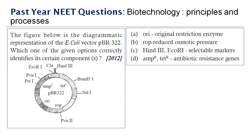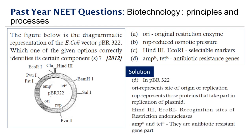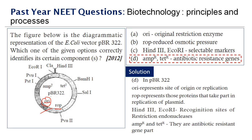Next question: the figure shows a diagrammatic representation of the E. coli vector pBR322. The ori represents the origin of replication. rop encodes proteins involved in the replication of the plasmid. HindIII and EcoRI are recognition sites for restriction endonucleases. AmpR and TetR are the antibiotic resistance genes. The correct component identified by option D is the antibiotic resistance genes.